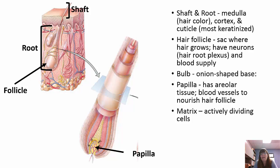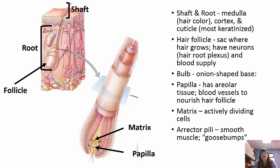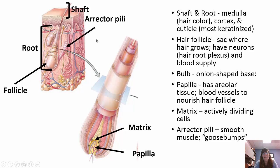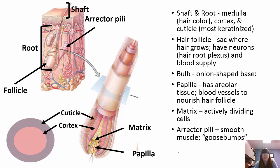The hair follicle is basically a sac where your hair grows from. It has neurons, a hair root plexus, and blood supply — which is why waxing is painful when the hair is pulled out by the root. The bulb is the onion-shaped base with areolar tissue and blood vessels that nourish the follicle, and the matrix is the portion that's actively dividing. The erector pili muscles are smooth muscles that cause the hairs to stand up — if you get cold and have goosebumps, that's the erector pili.